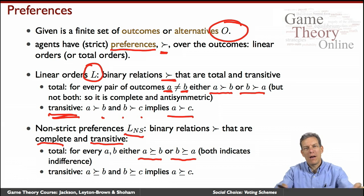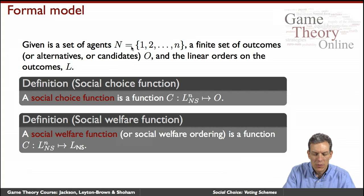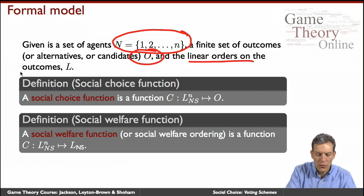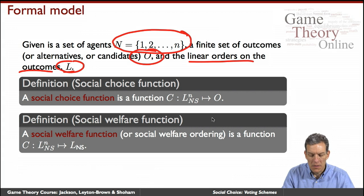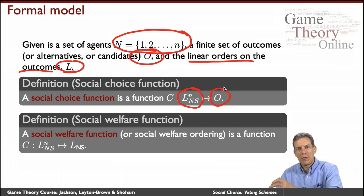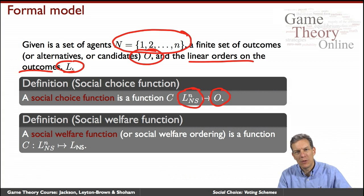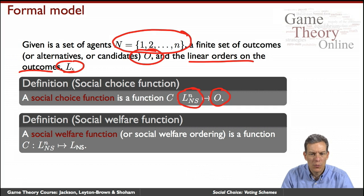Those are the objects we assume people have, and based on those, we try to make a choice for society. So the formal model: we've got a finite set of individuals, a finite set of outcomes O, and we consider the linear orders on the outcomes, the set L, and also the non-strict version. A social choice function maps from the set of preferences into outcomes — given everyone's rankings, I'll pick an outcome.